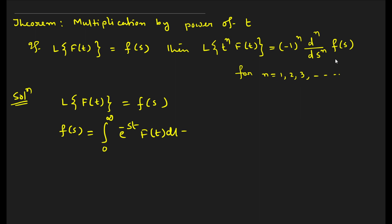Now look at the right-hand side — it is very interesting. If the power is n, then the right-hand side is (-1)^n times d^n/ds^n of F(s), where F(s) is the Laplace transformation of f(t). Let us prove it. We know that L{f(t)} = F(s), and F(s) can be written as the integral from 0 to infinity of e^(-st) f(t) dt.